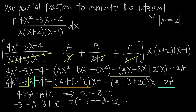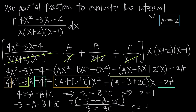Adding the two simplified equations together, the B and negative B cancel. 2 plus negative 5 gives negative 3, and C plus 2C gives 3C. So C equals negative 1. Plugging C equals negative 1 back into B plus C equals 2 gives 2 equals B minus 1, so B equals 3. We now have A equals 2, B equals 3, and C equals negative 1.